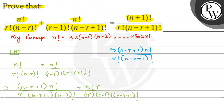Now, how can we say: plus r multiplied by n factorial, with denominator r multiplied by r minus 1, and then r factorial multiplied by n minus r plus 1 factorial. We can see a common factor here: n factorial upon r factorial multiplied by n minus r plus 1.